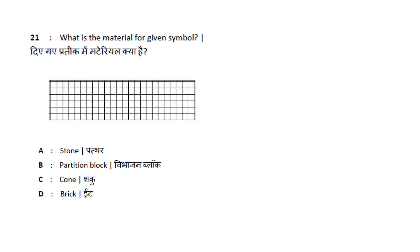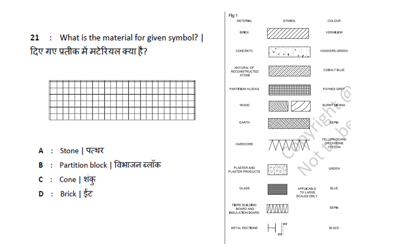Next question: What is the material for the given symbol? The options are stone, partition block, corner brick, and other things. This is the material symbol. The symbol for brick is shown, along with concrete, natural or reconstructed stones, and the partition block. This is option B. There is also wood, earth, plaster and plaster products, and the metal section symbol.